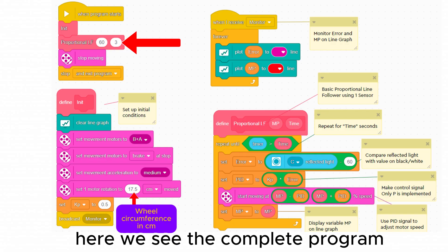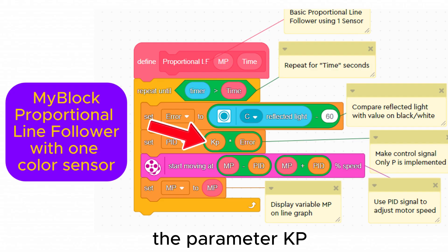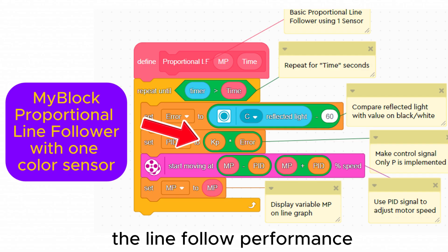Here we see the complete program for a three second movement at 60% speed. The monitor broadcast uses the line graph to display the motor power MP and the error signal. This is useful for diagnostics. The parameter KP is used to optimize the line follow performance.